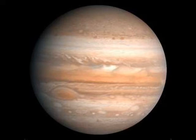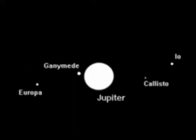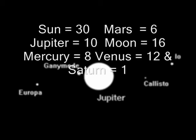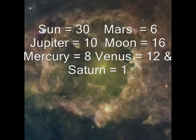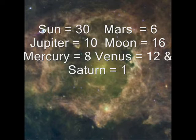Different ray numbers have been assigned to the seven revolving heavens. They are: Sun — 30, Mars — 6, Jupiter — 10, Moon — 16, Mercury — 8, Venus — 12, and Saturn — 1.